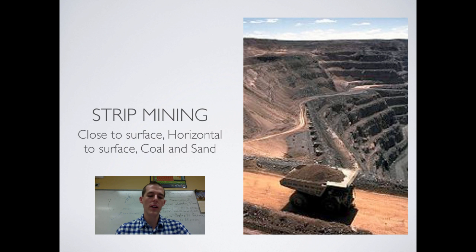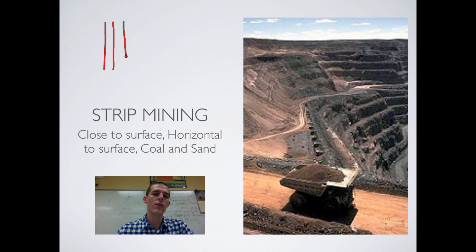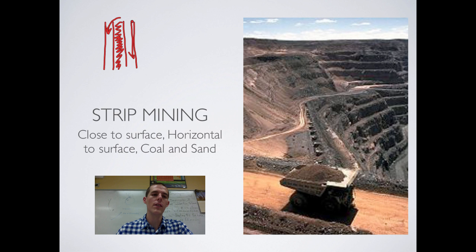The way strip mining works is, if you were looking from above, they would dig a strip of land out, then next to it dig another strip and start pulling out whatever they're after. For example, if they were digging for coal going horizontally, they would dig up the material and dump it into the adjacent hole. Once done, they've got another hole, so they'll dig right there and dump material over into the previous one.